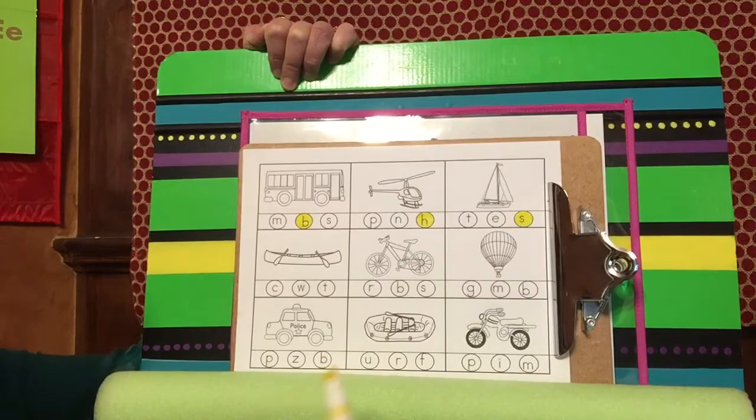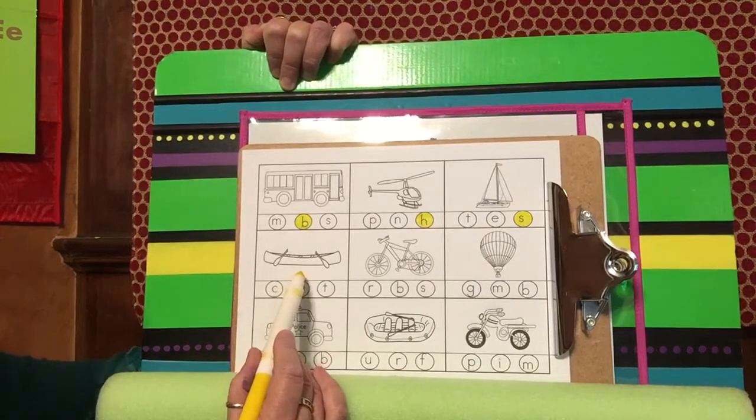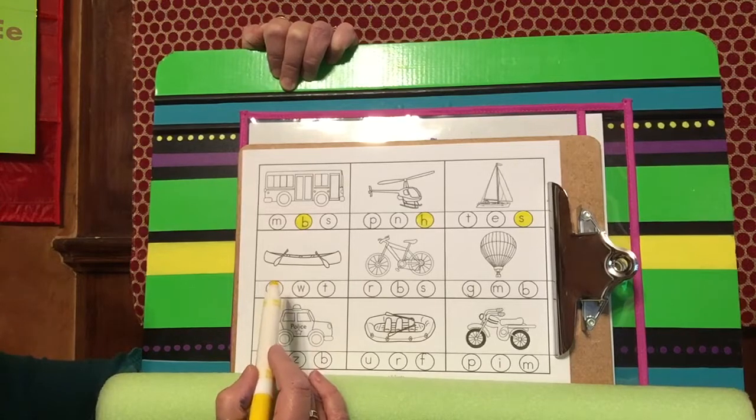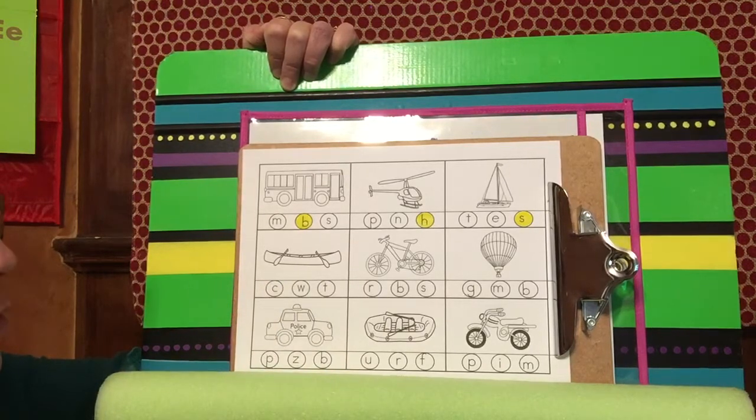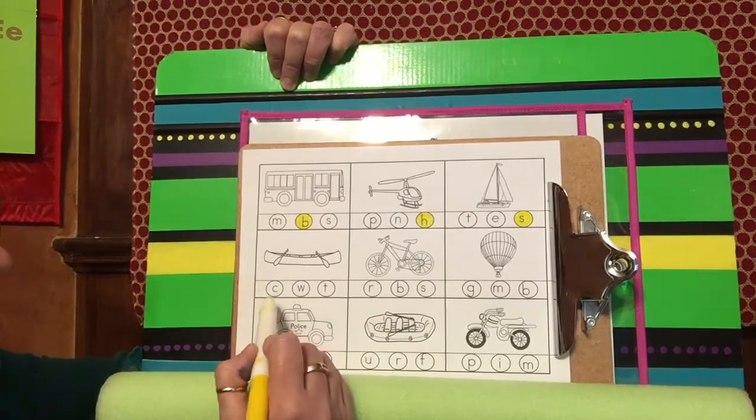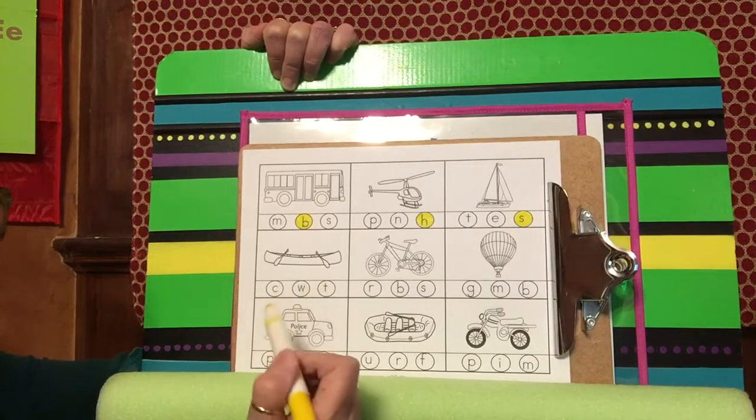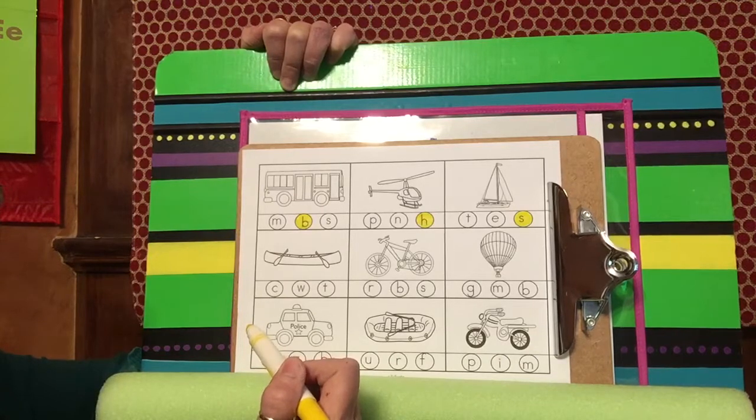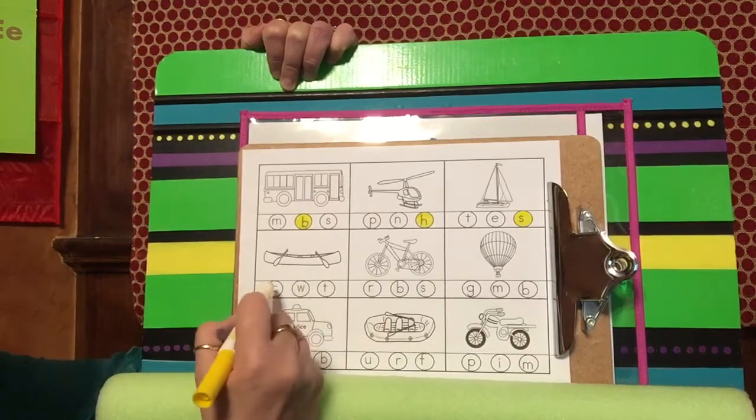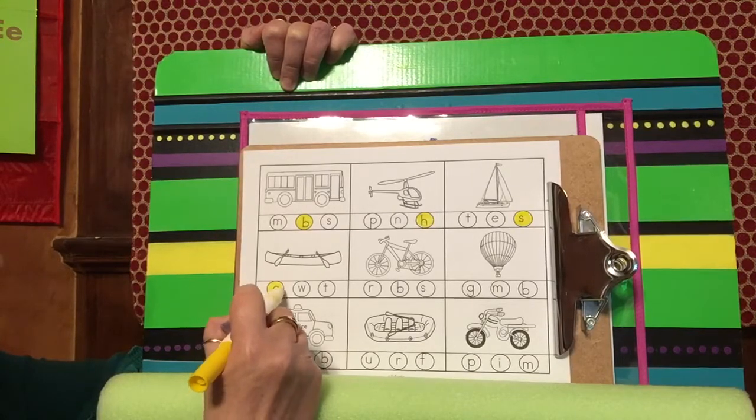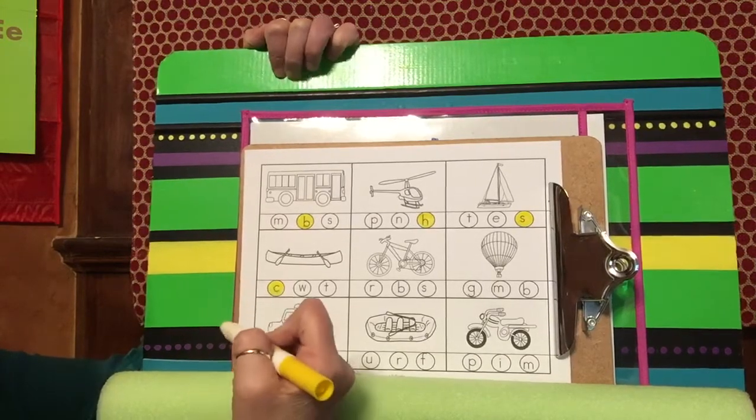What about this one right here? That's a special kind of boat. It's called a canoe. Does canoe start with C, W, or T? Canoe starts with our C, so we'll color that in. And that is another type of vehicle that travels by water.